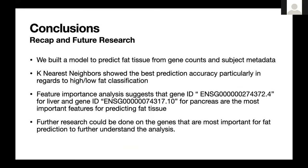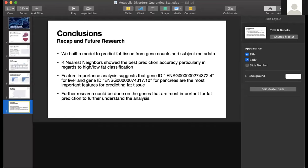To recap: we built an experiment to predict fat tissue from gene counts and subject metadata. We found that K-Nearest Neighbors showed the best prediction accuracy, particularly in high and low fat classification. Feature importance analysis suggests that two specific gene IDs are the best for predicting fat tissue. For further research, we'd like to look more at those genes to better understand the biology. Thank you.